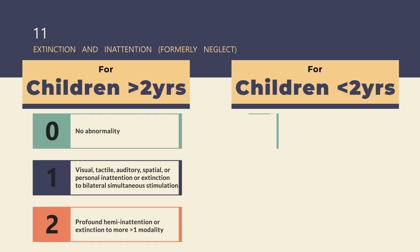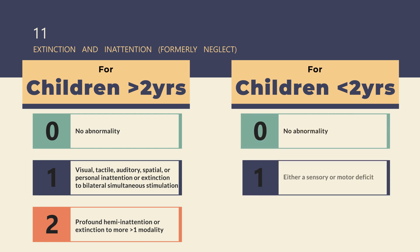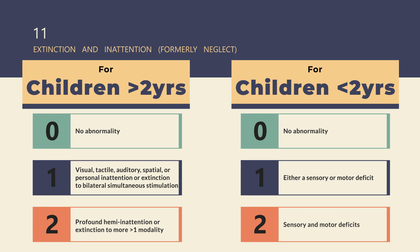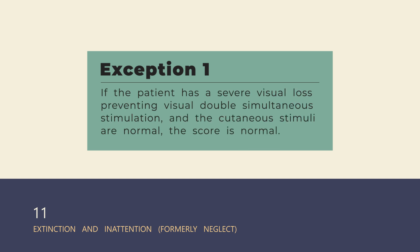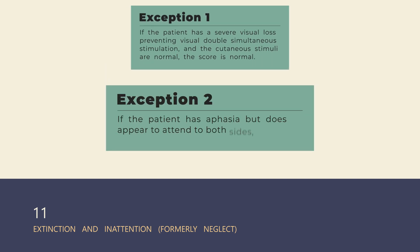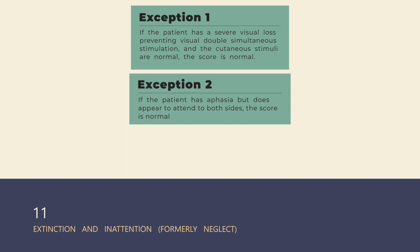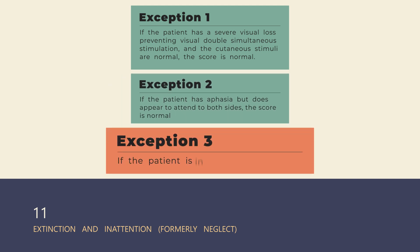For children aged 4 months to 2 years, score 0 in the absence of any abnormality. Score 1 if there is either a sensory or motor deficit. Score 2 if there are both sensory and motor deficits on the general neurological examination. If the patient has severe visual loss preventing visual double simultaneous stimulation and cutaneous stimuli are normal, the score is 0. If the patient has aphasia but does not appear to attend to both sides, the score is 0. Comatose patients automatically score 2 on this item.